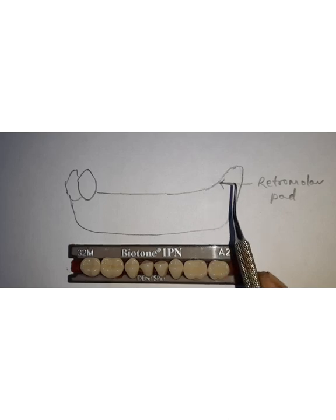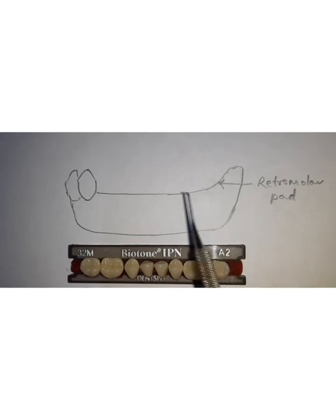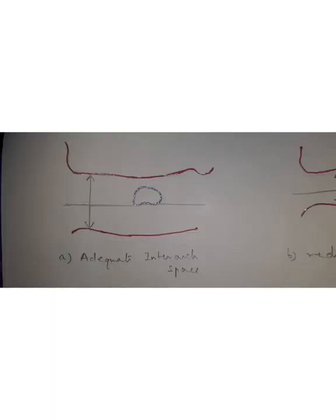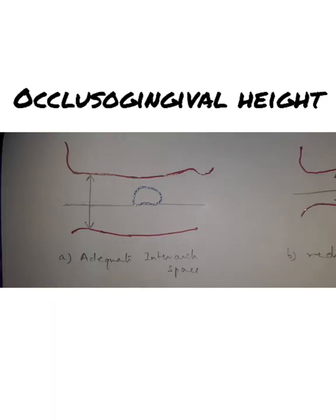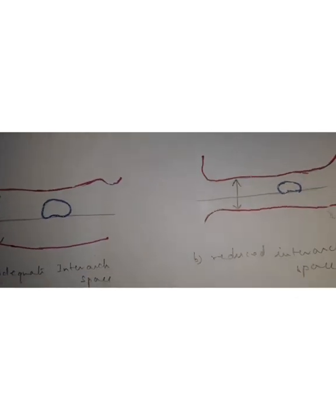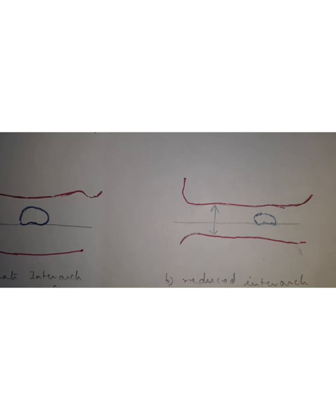Vertically directed forces help in stability and retention of the prosthesis, in comparison to forces generated by teeth placed on the slope of the residual alveolar ridge — so that should be avoided. Next, regarding occlusal gingival height: posterior teeth are selected on the basis of the available inter-arch space. If there is adequate inter-arch space, the length of the posterior teeth is chosen accordingly. If inter-arch space is reduced, we select the mole number and size of teeth accordingly.